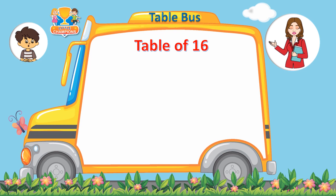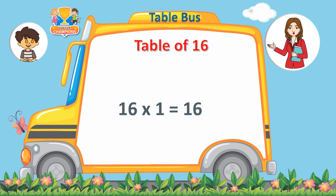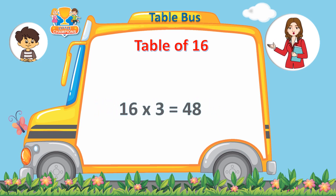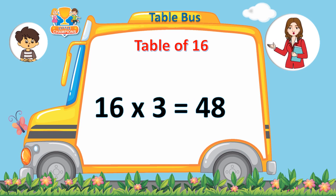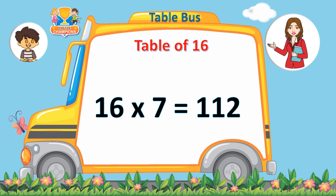16 ones are 16. 16 twos are 32. 16 threes are 48. 16 fours are 64. 16 fives are 80. 16 sixes are 96. 16 sevens are 112.